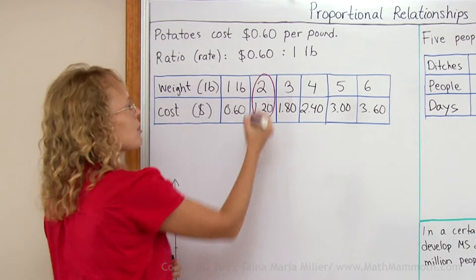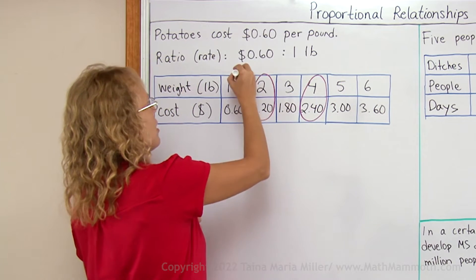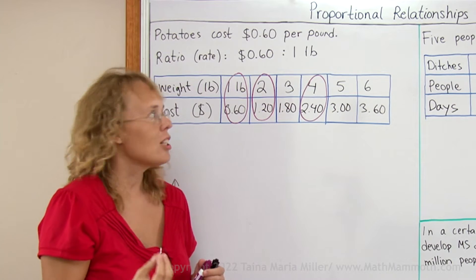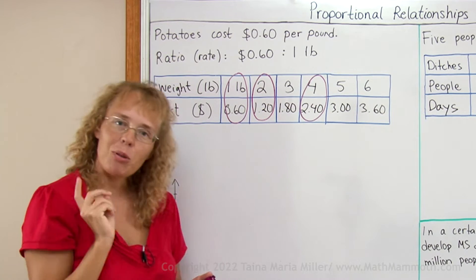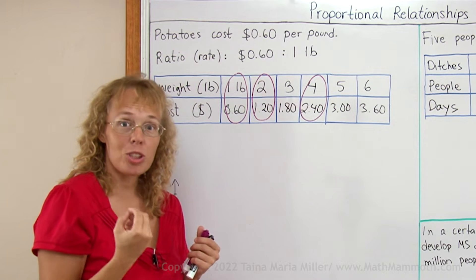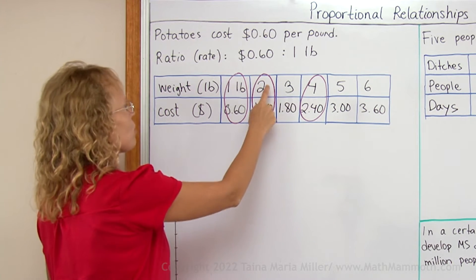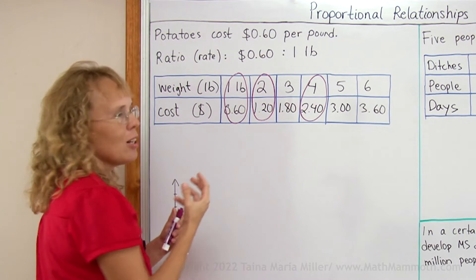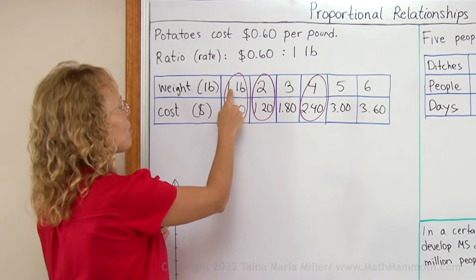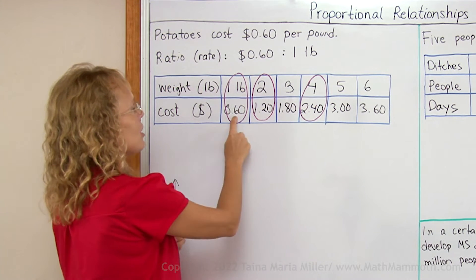These two numbers form a ratio, and these two numbers form a ratio, and these two form a ratio. Each pair of numbers forms a ratio and each one of those ratios is equivalent. That's when two variables are in a proportional relationship. So 2 pounds to $1.20 is equivalent to 60 cents per one pound, and each ratio or rate here is equivalent.